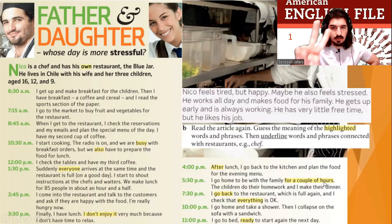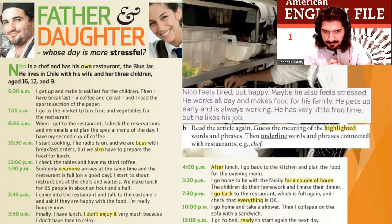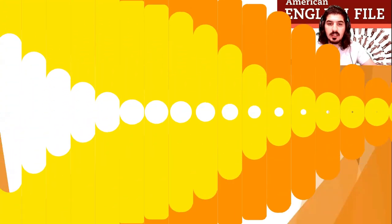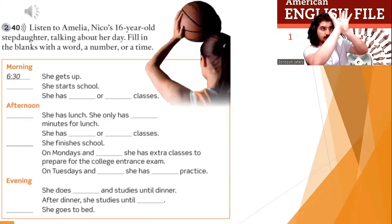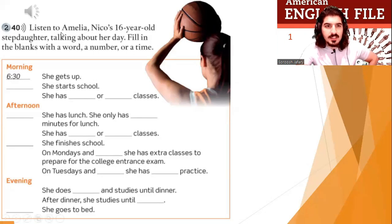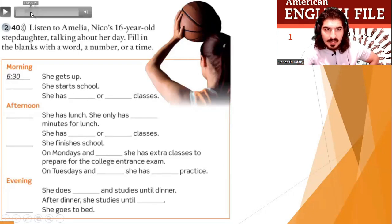There are some highlighted words: 'for a couple of hours' means two hours; also 'after,' 'go back,' 'everything,' 'ready,' 'don't enjoy it,' 'busy,' 'own.' Check your dictionary or use Google Translate, then tell your partner. Now look at the picture — a girl is playing basketball. Listen to Amelia, Nico's 16-year-old stepdaughter, talking about her day. Fill in the blanks with a word, a number, or a time.